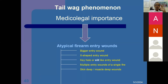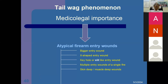Atypical entry wounds include: bigger entry wounds, X-ray shaped entry wound, keyhole or slit-type entry. Multiple entry wounds from a single fire are possible — for example, if the bullet enters through the lateral side of the right hand, then medial side of the right hand, through the chest, exits the left side, and enters the left hand, a single shot can produce multiple entry and exit wounds. The typical entry wound is usually circular, or oval if there is an angle.